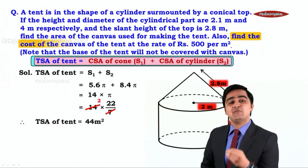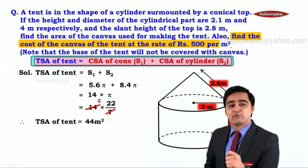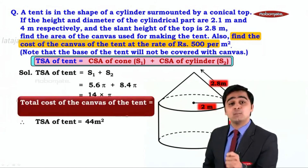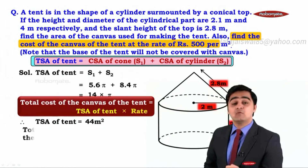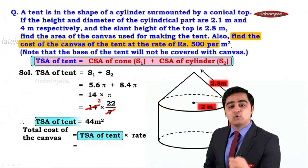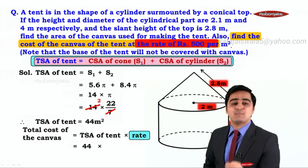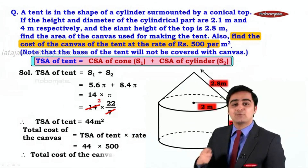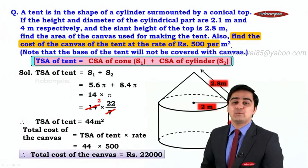Next, find the cost of the canvas of the tent at the rate of rupees 500 per meter square. The total cost of the canvas for making the tent is equal to the total surface area of the tent multiplied by the rate. The total surface area is 44, and the rate is 500. Forty-four into 500 is 22,000. So the total cost of the canvas for making the tent is equal to rupees 22,000.